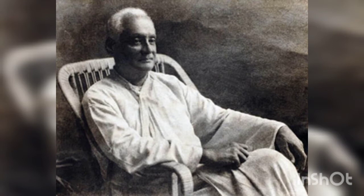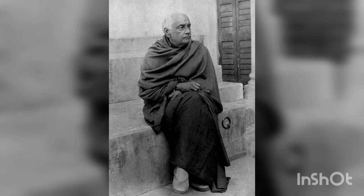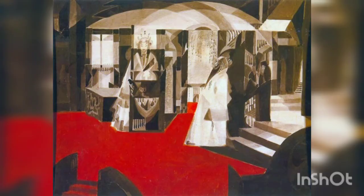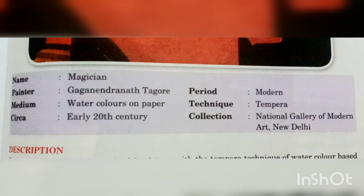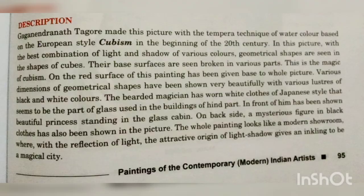Now let's begin with the theory part. In the modern trend, along with many other artists, Gaganendranath Tagore shone brightly. He is famous for making many unique and amazing paintings, one of which is 'Magician.' Look at this picture carefully. The painting name is 'Magician,' the painter is Gaganendranath Tagore, the medium is watercolor on paper, circa early 20th century, period modern, technique tempera, and the collection is at the National Gallery of Modern Art, New Delhi.